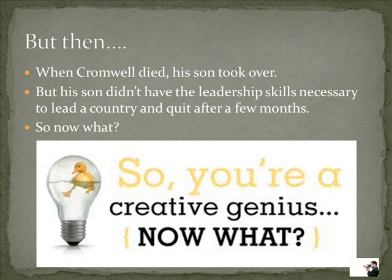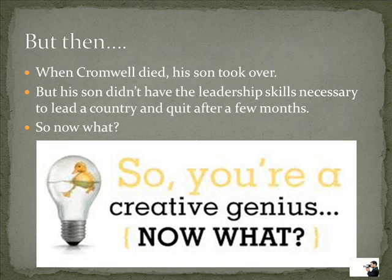Like everybody, Cromwell eventually died. His son stepped up to take charge, but his son didn't have the characteristics and skills necessary to be in charge of the country. Nobody really cared for him, so he quickly decided it was time to leave and he quit. At that point, England had a problem — they had fought an entire war against the concept of absolute monarchy, the monarchs were beaten, they had the Lord Protectorate thing, and then all of a sudden they had nobody in charge. England had to have somebody in charge. Tomorrow we'll find out who.